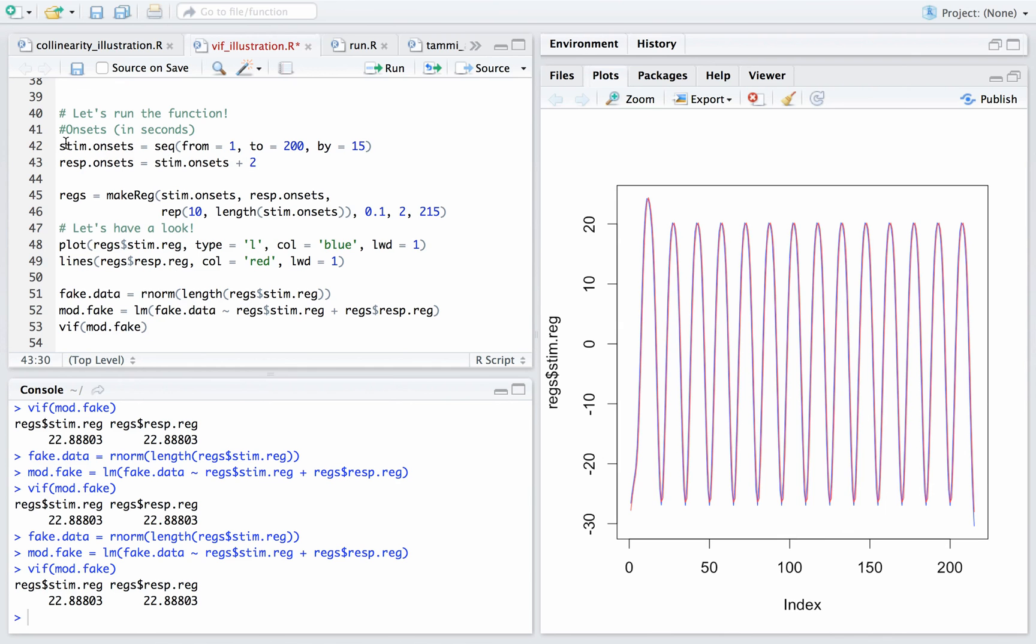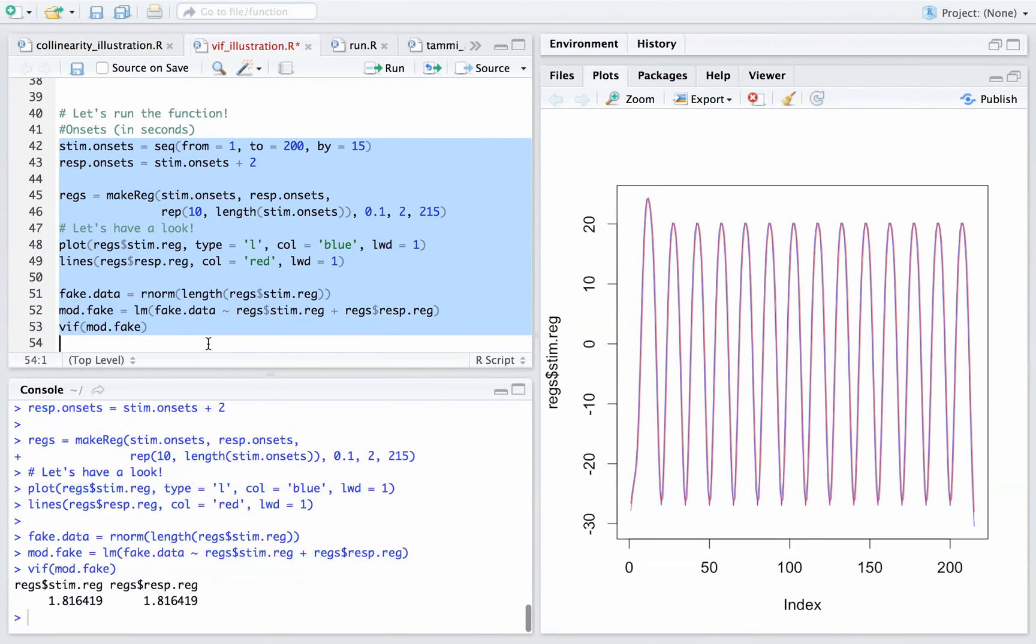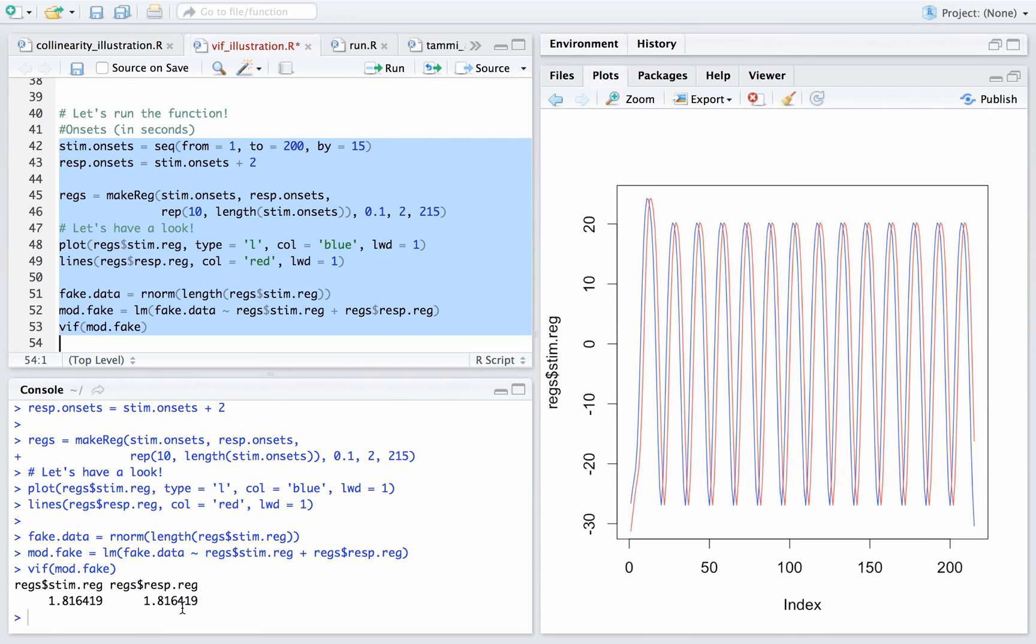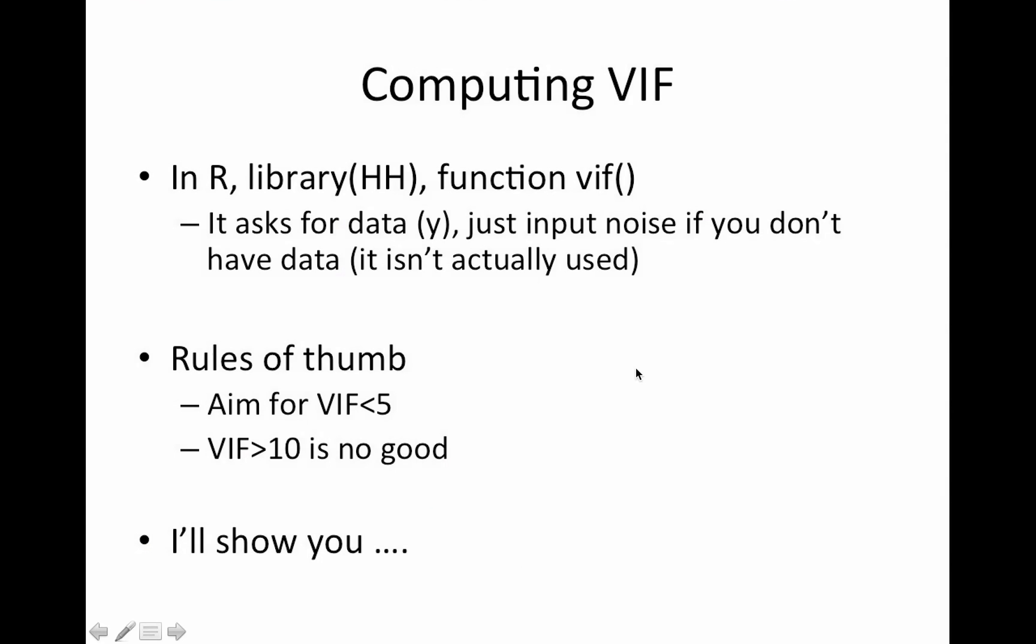All right, if we separate these by two seconds instead, much better. Now our VIF is far below our cutoff of five. And of course, these are just rules of thumb. If you break the rule by a little bit, it might be fine. It's just going to kill your power, as we saw before.